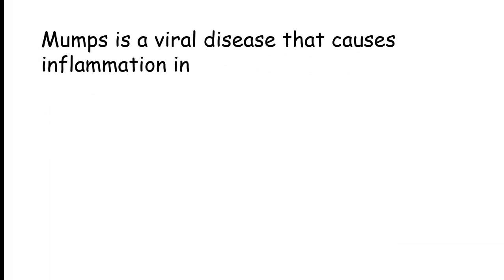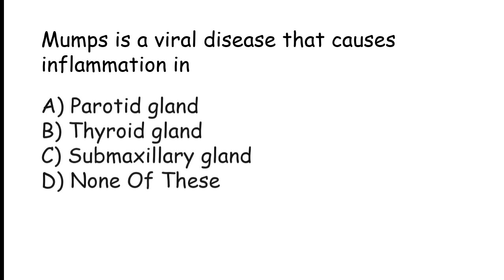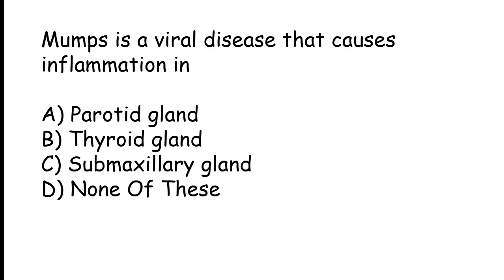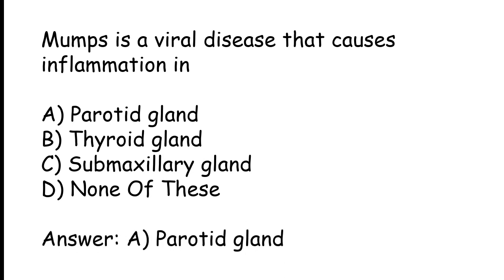Mumps is a viral disease that causes inflammation in the: Parotid gland, Thyroid gland, Submaxillary gland, or None of these. The correct answer is Option A. Mumps is a viral disease that causes inflammation in the parotid gland.